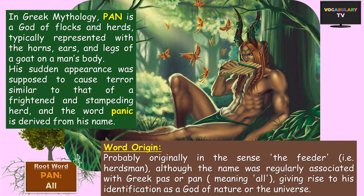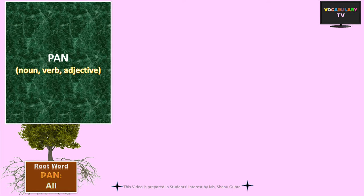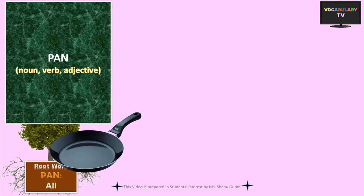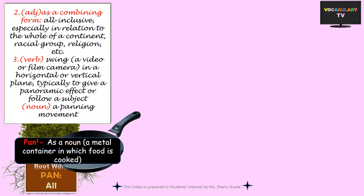The word Panic means sudden fear or anxiety. Since Pan means all, this god also started getting identified as a god of nature or the universe, so one of the meanings of Pan is the allusion to this Greek god. Disney characters like Peter Pan probably take after him. There are four main definitions of Pan in English, out of which the most common one is the pan — the metal container in which you cook food. The second most common meaning is 'all,' as in all-inclusive or all-encompassing, especially in relation to the whole of a continent, racial group, religion, etc.